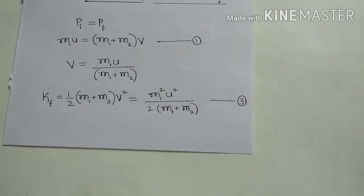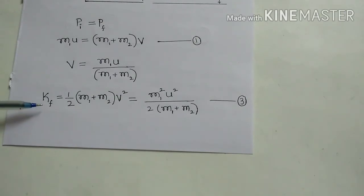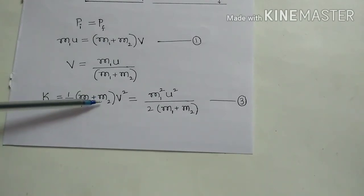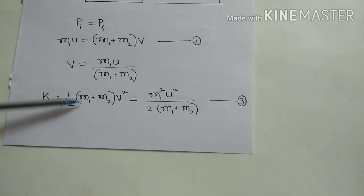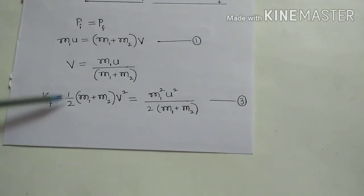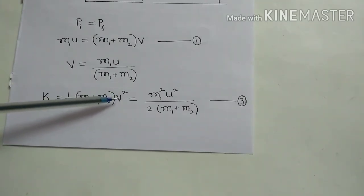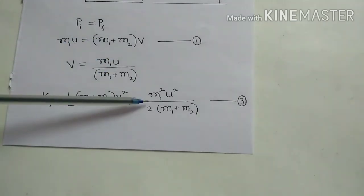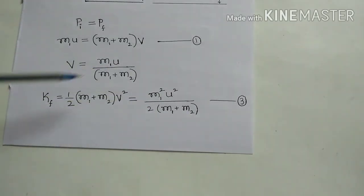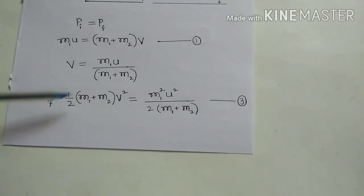Now, what is the total kinetic energy just after collision — I am calling this Kf, the final kinetic energy. Just after collision: Kf = ½·(m1 + m2)·v², because both are moving together with velocity v. Substituting v from equation one, we get: Kf = m1²·u² / [2·(m1 + m2)]. This is equation three — the total kinetic energy just after collision.